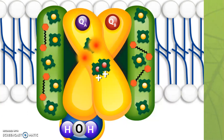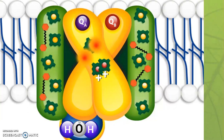The water molecule is split and donates electrons back to the reaction center pair. The protons — H-plus — go into the lumen to contribute to the proton gradient, with more hydrogen on one side of the membrane than the other. The oxygen is actually just a waste product. We get molecular oxygen, O2, after two water molecules have been split.